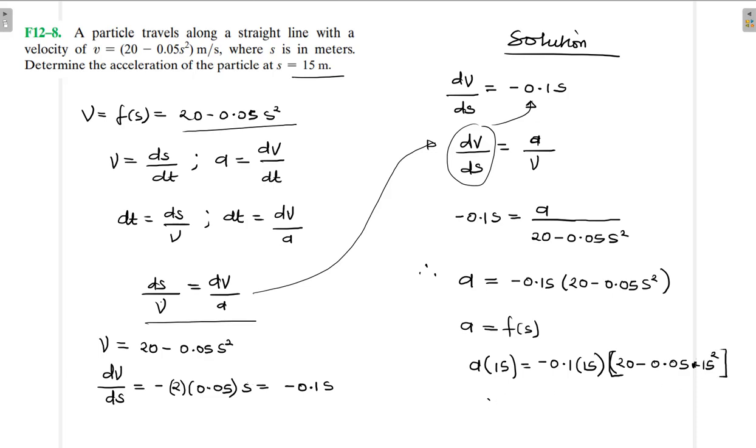Our a(15), let's grab our calculators: -0.1 times 15 times 20 plus 0.1 times 15 times 0.05 times 15².